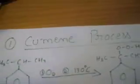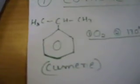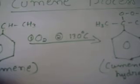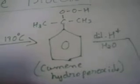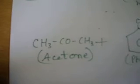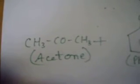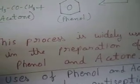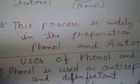The preparation of phenol from cumene is known as the cumene process. When cumene, that is isopropylbenzene, is oxidized in the presence of air at 130 degrees Celsius, cumene hydroperoxide is formed. On further treating it with dilute acid, phenol is formed as the major product and acetone, a ketone, is formed as the minor product. This process is widely used in the preparation of both phenol and acetone.